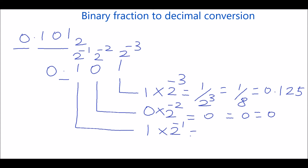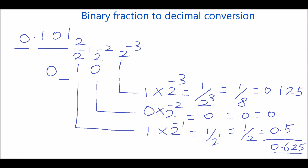Then take the next digit 1. 1 into 2 power minus 1 is 1 by 2 power 1, that is 1 by 2, which is 0.5. If you sum these: 0.125 plus 0 plus 0.5, which equals 0.625. So the binary number 0.101₂ can be written as 0.625 base 10.